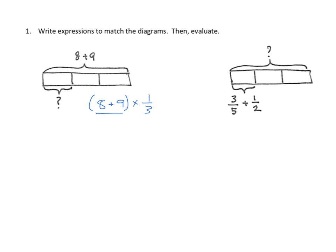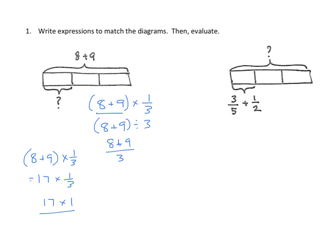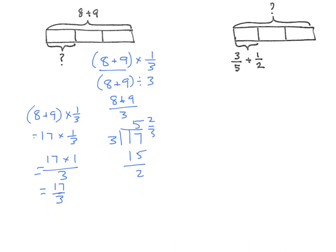We could write that other ways — divided by 3, or as 8 plus 9 over 3. Now working with the first one: the sum of 8 and 9 is 17, times 1 third. That equals 17 times 1 over 3, which equals 17 thirds. Since that's also a division problem, 17 divided by 3 equals 5 remainder 2, so the answer is 5 and 2 thirds.